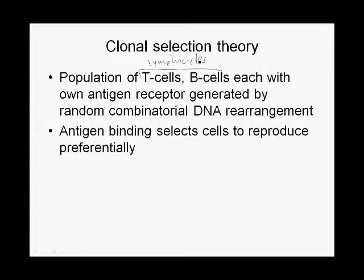This should remind you of evolution. Much like evolution by natural selection — where random mutation produces lots of genetic variation and then there is natural selection for the most adaptive genetic variants — here we have a population with tremendous genetic variation in antigen receptors, and those cells whose antigen receptors can best bind to foreign antigens are selected to proliferate. So the immune system is essentially evolution by antigen selection.